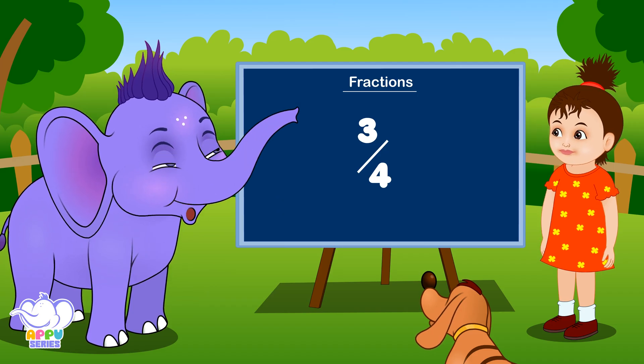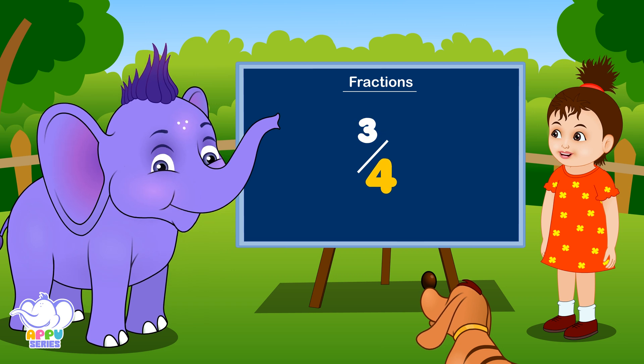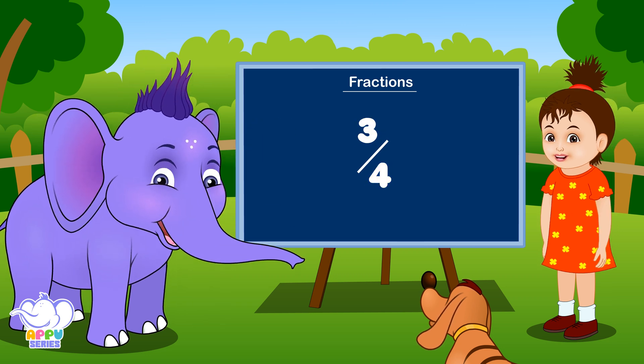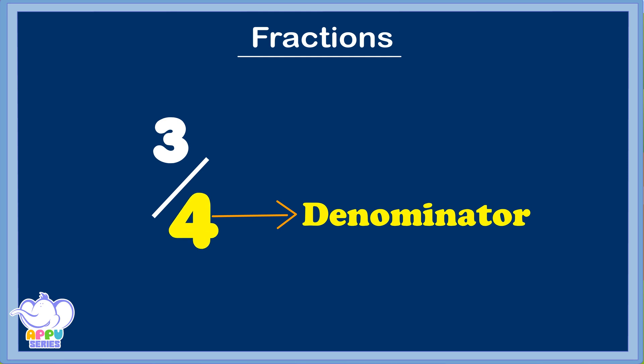The numbers are found, top and bottom. Let's see how you can write them. Denominator goes down right here. Numerator goes up right here.